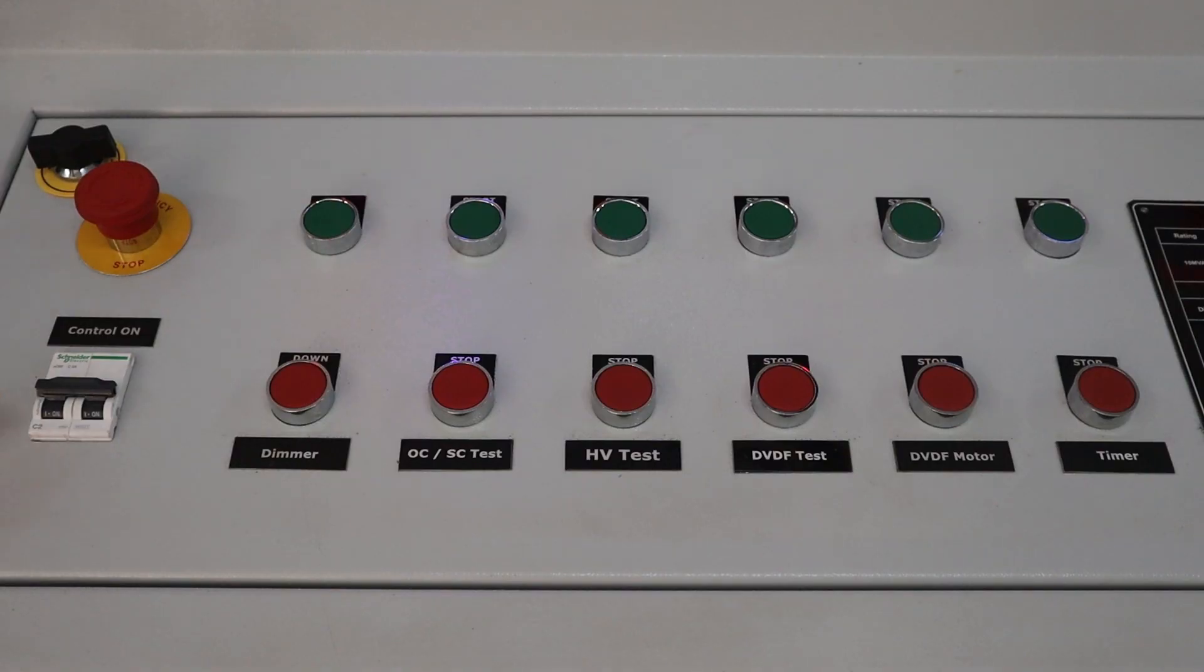This is main supply MCB for control panel. This is emergency push button. This is push button for dimmer increment and decrement. This is start and stop push button for OCSC test, HV test and DBDF test.